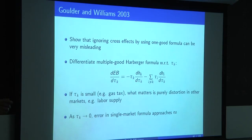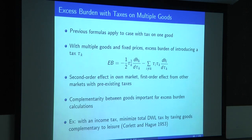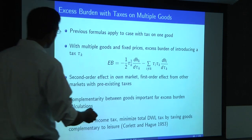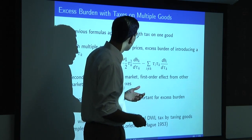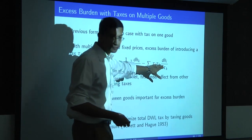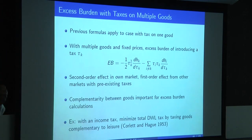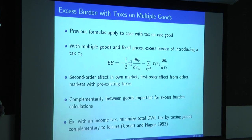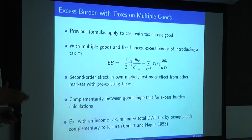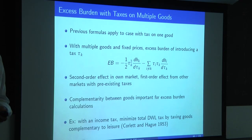You need to take into account all these cross-price elasticities to understand the deadweight burden of the tax, and ultimately the optimal design of the tax system. In response to a student question: think of leisure as one of the Hicksian commodities you're consuming. In the example, you're already consuming too much leisure because there's effectively a subsidy for leisure—a tax on labor is the same thing.